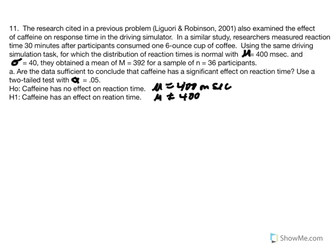The null hypothesis states that caffeine has no effect on reaction time — the treated population mean would equal 400 milliseconds, no different from the untreated population. The research hypothesis states that caffeine has an effect on reaction time, so the treated population mean would not equal 400 milliseconds, illustrating a difference between the sample and the population mean.